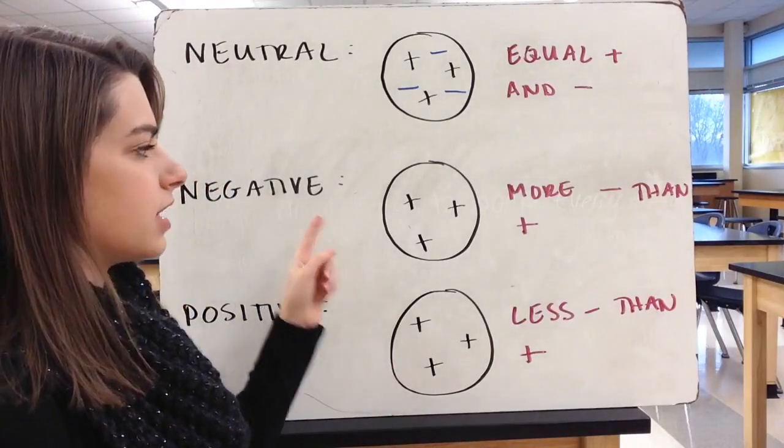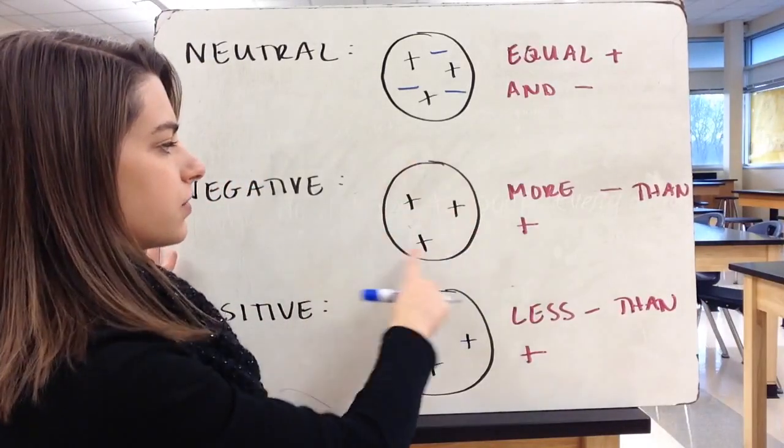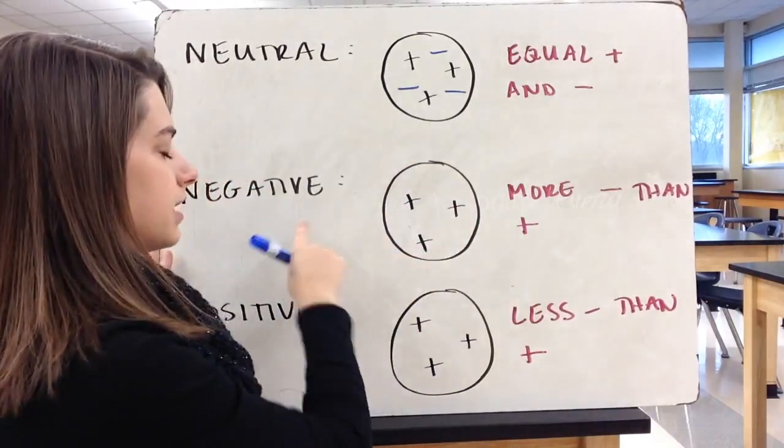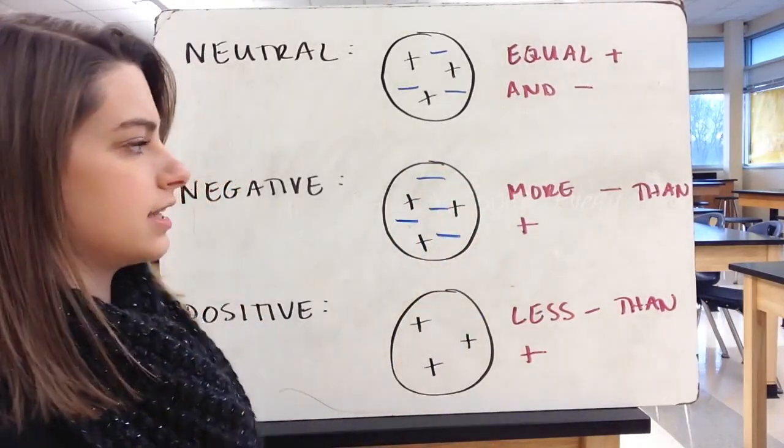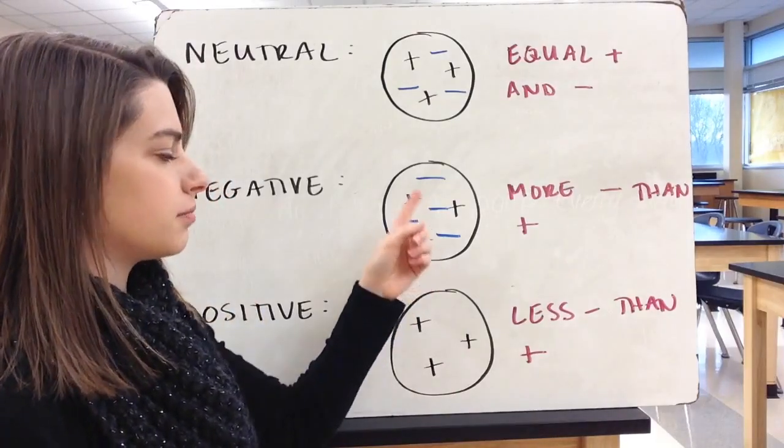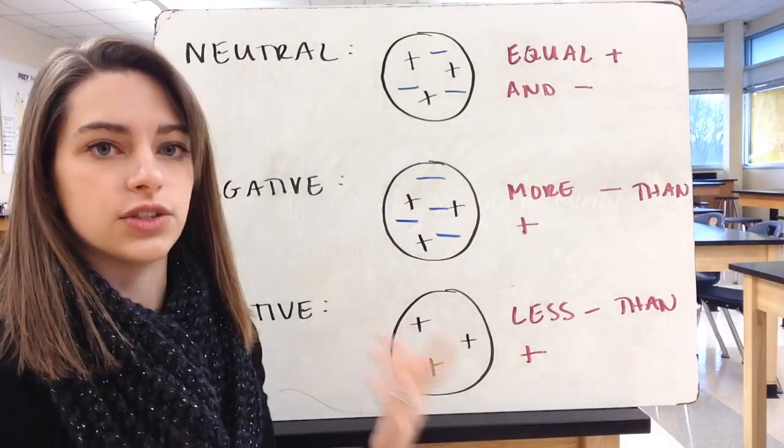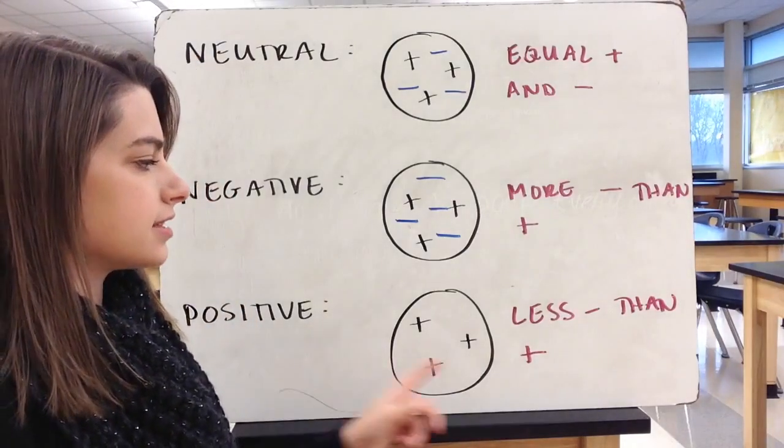If we want a negative number, we have to have more negatives than positives. So again, I have three positives here. If I wanted this to be a negative atom, I could add four negatives. Now my negatives outweigh the positives. Negative 4 plus positive 3 gets you a negative 1. Overall, the atom is negative.